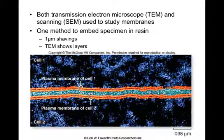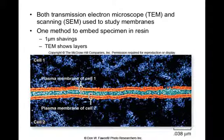We can visualize membranes using transmission electron microscopes and scanning electron microscopes. In one method, tissue is embedded in a hard epoxy matrix. The epoxy block is then cut with a microtome — a very sharp blade — making incredibly thin transparent shavings less than one micrometer thick. These shavings are placed on a grid and a beam of electrons is directed through it with the transmission electron microscope. At high magnifications, the electron microscope provides resolution good enough to reveal the double lipid bilayer, though false color has been added to enhance the details.